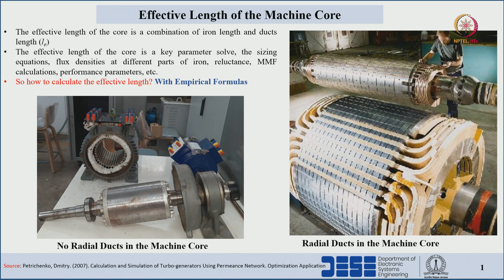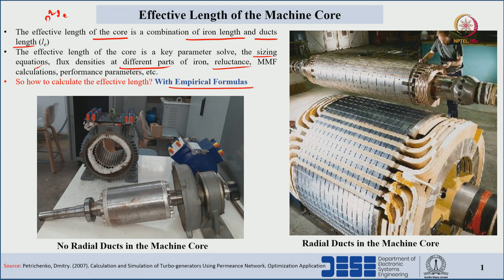The effective length of a core, LE, is a combination of iron length plus the duct length. The effective length of the core is a key parameter to solve the sizing equations where the D²·LE term we have discussed, as well as flux densities at different parts of iron, reluctances, MMFs, and other performance parameters. There are no straightforward equations — some empirical formulas depending on the literature and experience from manufacturers will be discussed in this lecture.